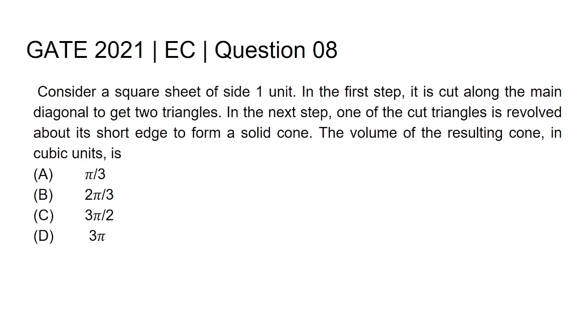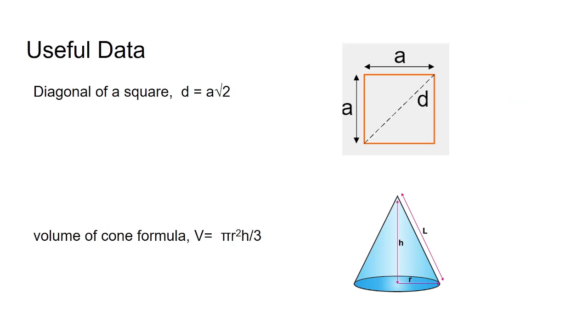In the first diagram, that is the topmost diagram, one square is shown. A square has each side of length a unit. d is diagonal, so diagonal d equals a multiplied by root 2. This is the formula for finding the diagonal of a square if its side is given.